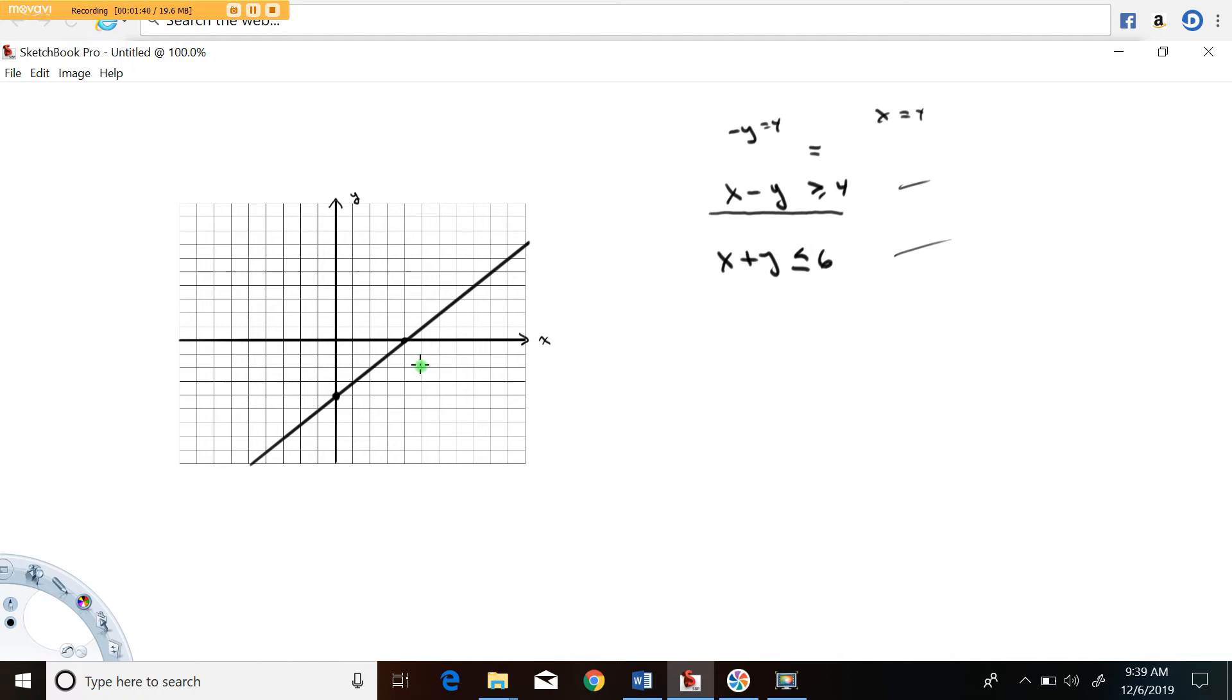Now we have to decide whether or not values over here continue to solve this or over here. You just typically pick a test point like 0, 0 is a nice easy one. If you put 0 here minus 0 greater than or equal to 4, this ends up reading 0 greater than or equal to 4. And this is a false statement.